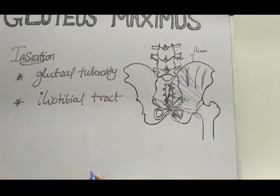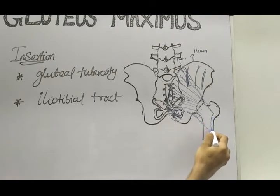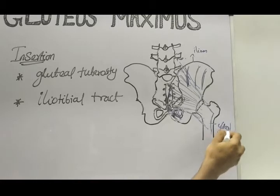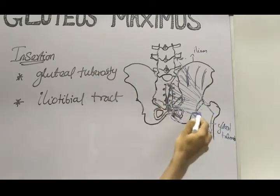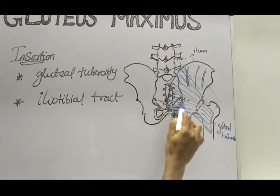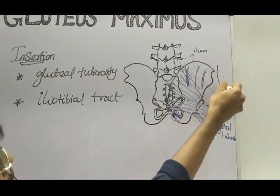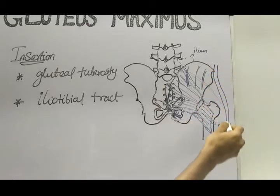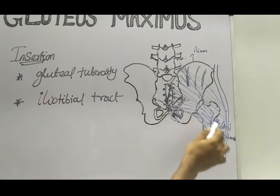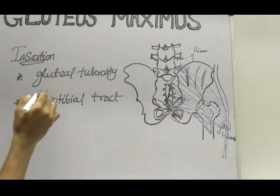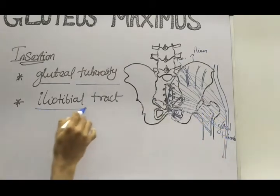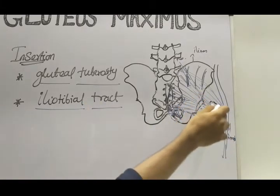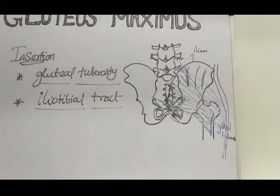Now we are going to see the insertion of this muscle. The muscle comes to the femur bone and inserts into the gluteal tuberosity, which is present in the upper part of the femur bone — this is where the deep fibers of the muscle insert. The superficial and upper fibers go and insert into the iliotibial tract, which is a band of fascia present laterally. Most of the fibers insert into the iliotibial tract, which supports the bones of the lower limb.